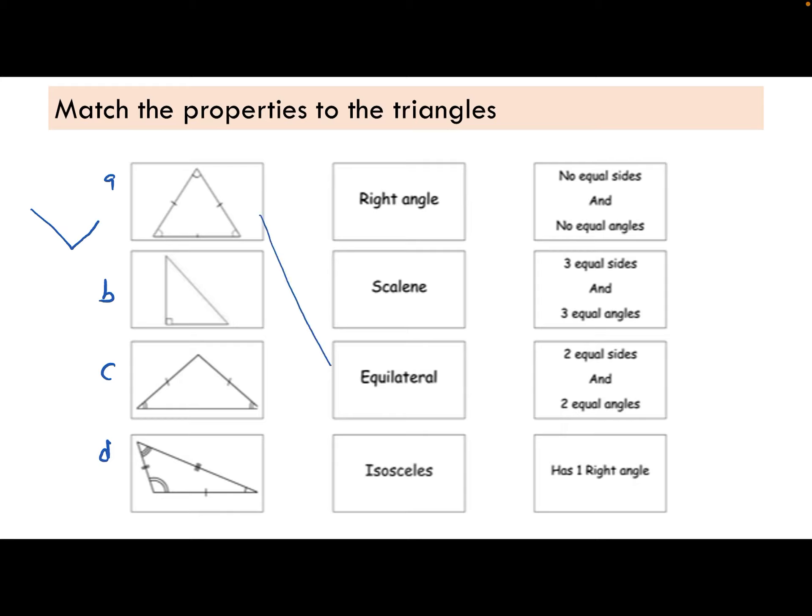So we know this is an equilateral triangle and it has three equal sides, three equal angles. Well done if you got that. Next up we have a right angle triangle. Has one right angle.